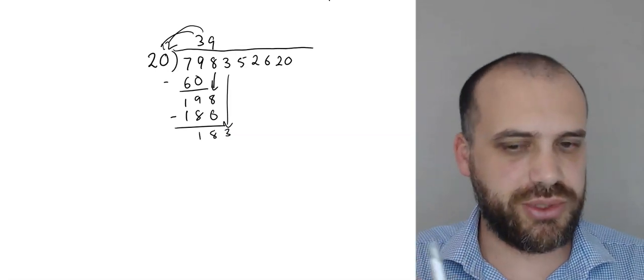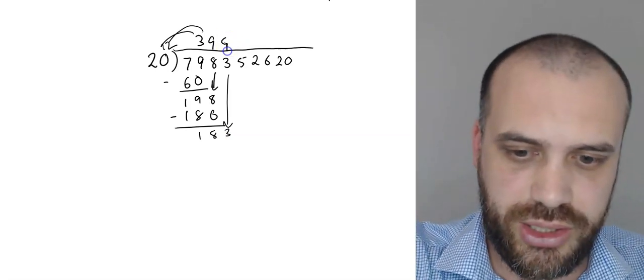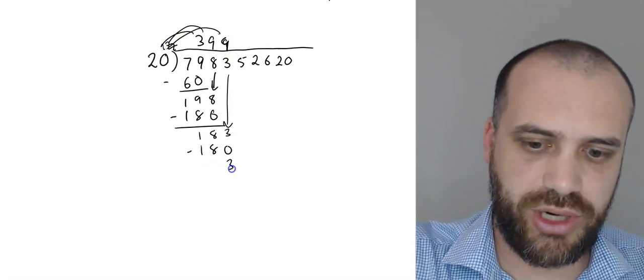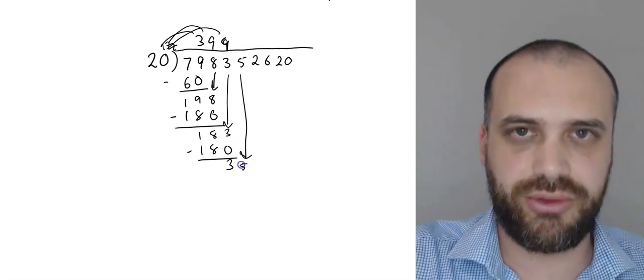183. How many times does 20 go into 183? Nine times. Nine times 20 is 180. Subtract one from the other. We get 3. Drag the next one down.